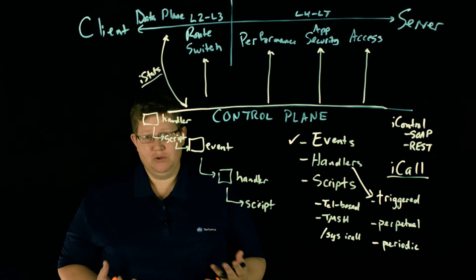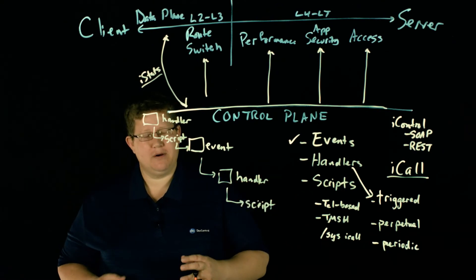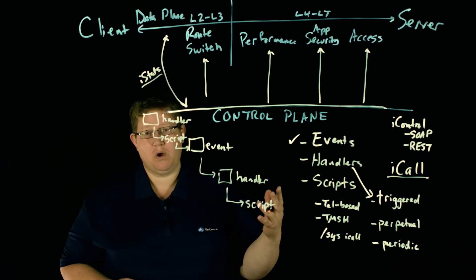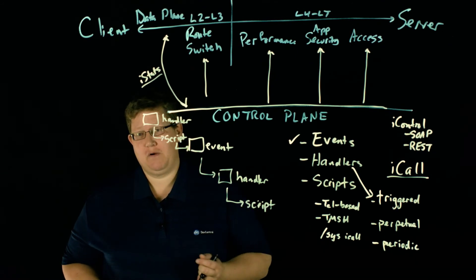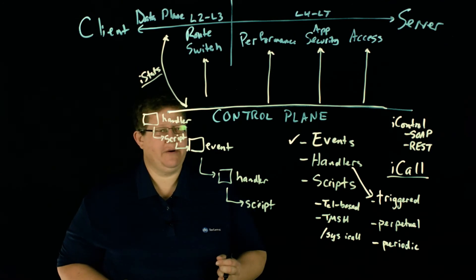And so use cases. What would you use iCall for? And there are a ton of use cases. I mentioned one, like you have a BIG-IP fails over. Well, why did it fail over? And how do you get around to handling that scenario?